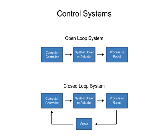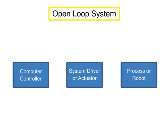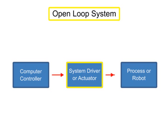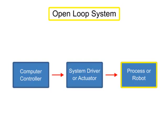There are different types of control systems used in robotics. In open-loop control, the computer sends signals based on the current state without taking into account feedback from the system.